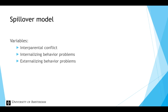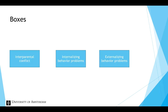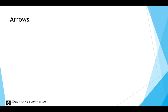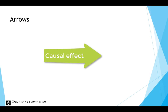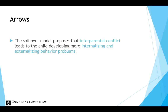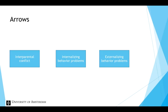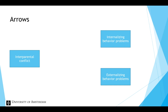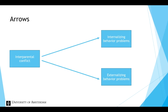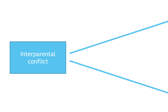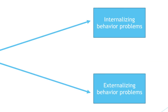Recall from the previous video that in a conceptual model, variables are put in a box. In a conceptual model, arrows represent a causal effect and point from the cause to the effect. In this example, inter-parental conflict has an effect on internalizing and externalizing behavior problems. We can reorganize the boxes and add two arrows pointing from inter-parental conflict, the cause, to internalizing and externalizing behavior problems, the effects.